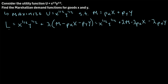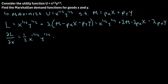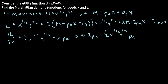Let's simplify by distributing lambda into the parentheses, giving us x to the one-half times y to the one-half, plus lambda times m, minus lambda times p_x times x, minus lambda times p_y times y. The first step is to take the derivative of the Lagrangian with respect to x. We get one-half times x to the negative one-half times y to the one-half, minus lambda times p_x, set equal to zero. Solving, we find p_x equals one-half x to the negative one-half times y to the one-half, divided by lambda.